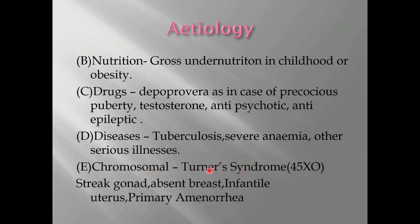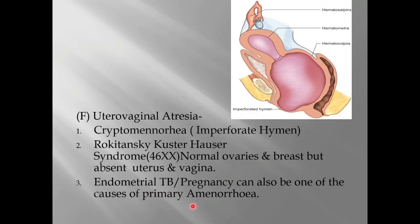Diseases such as tuberculosis, severe anemia, or other serious illnesses can also cause amenorrhea. Chromosomal anomalies are another cause — for example, Turner syndrome, where every female normally has 46 XX chromosomes, but in this condition the girl is missing one X chromosome, making her karyotype 45 X0.